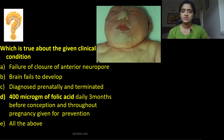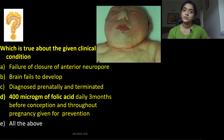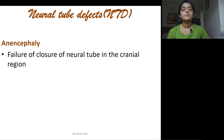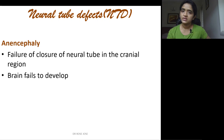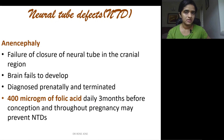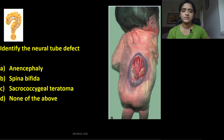MCQ: identify the clinical condition — it is anencephaly, caused by failure of closure of the anterior neuropore so the brain fails to develop. It can be diagnosed prenatally and the pregnancy can be terminated. Importantly, 400 micrograms of folic acid daily, starting three months before conception and continuing throughout pregnancy, may prevent neural tube defects including anencephaly.